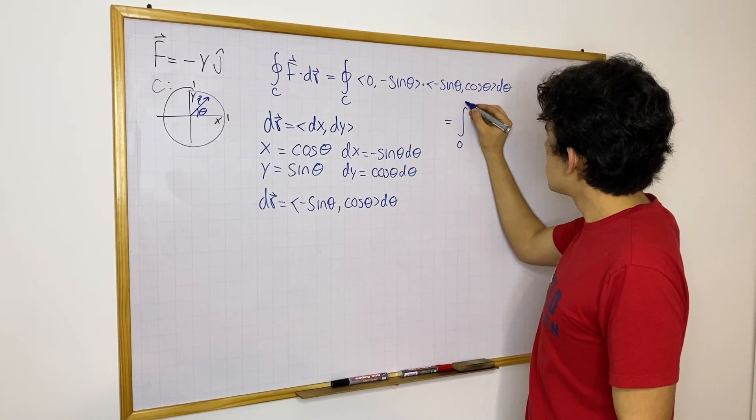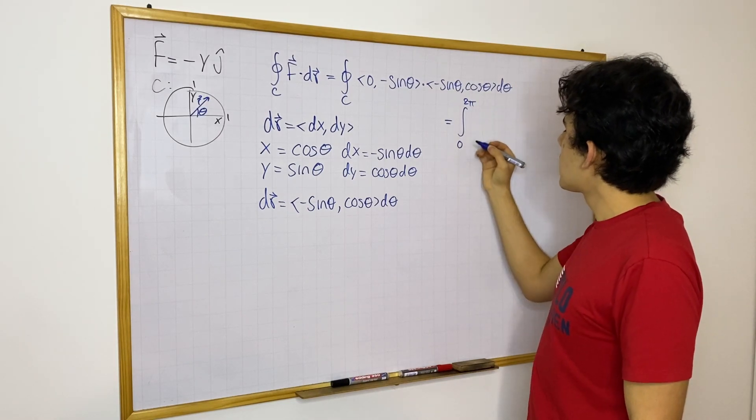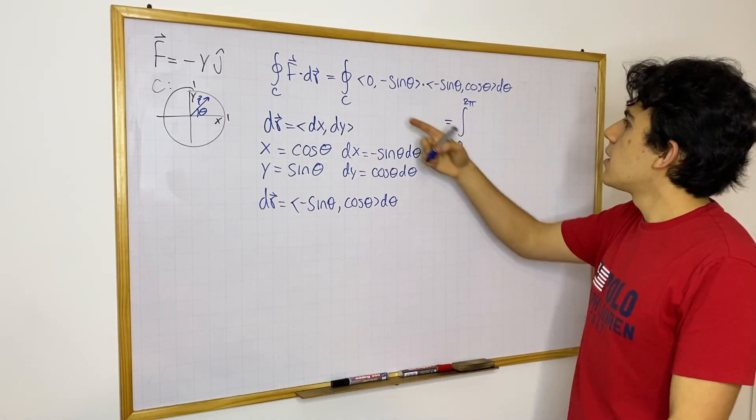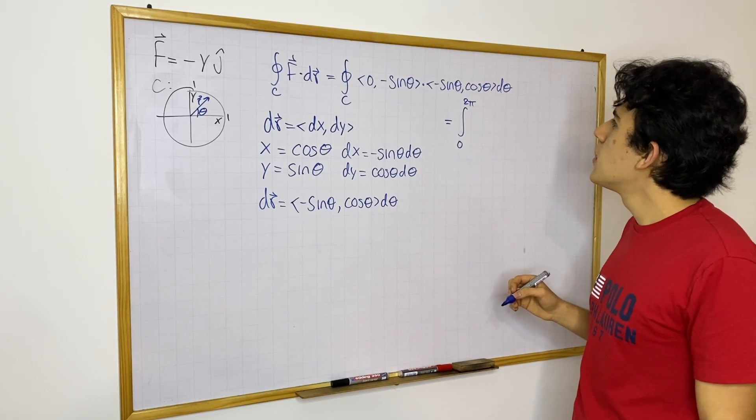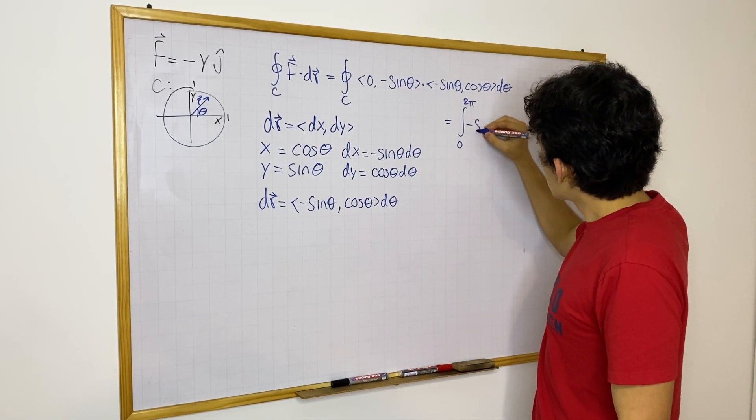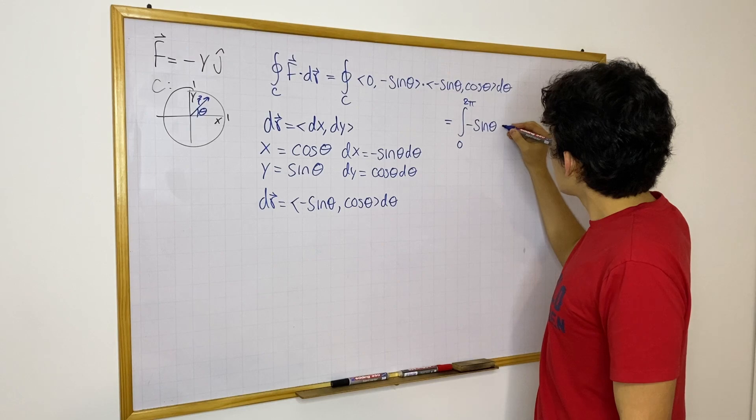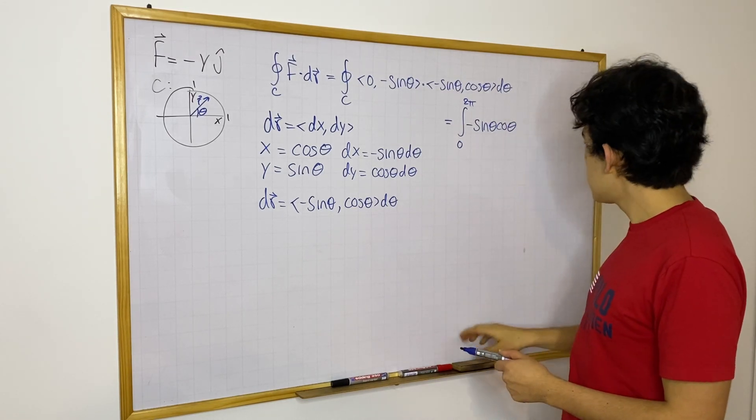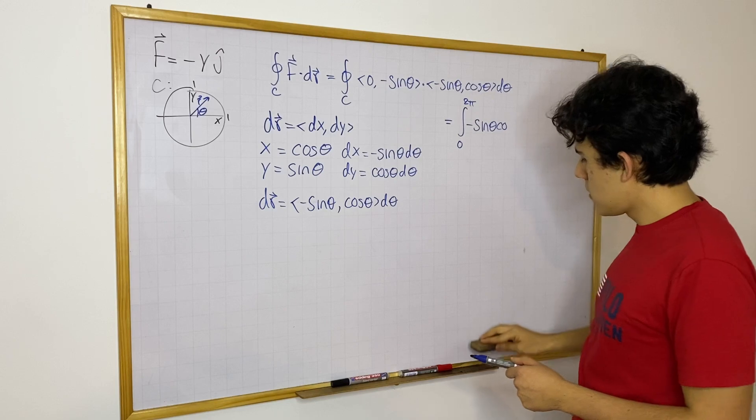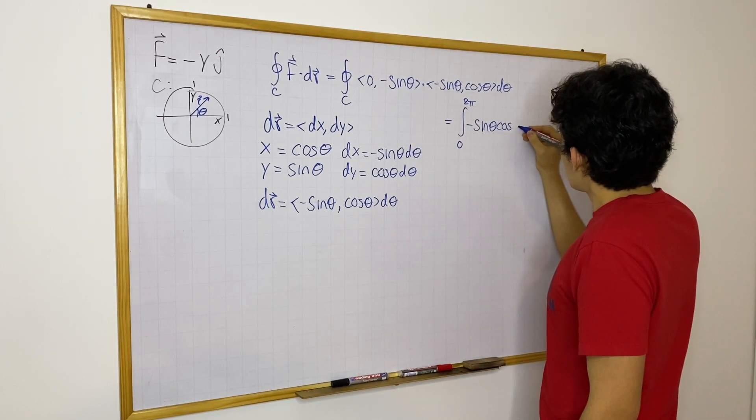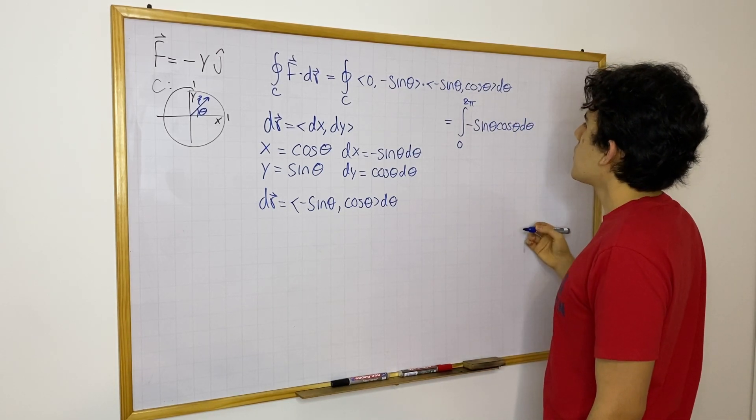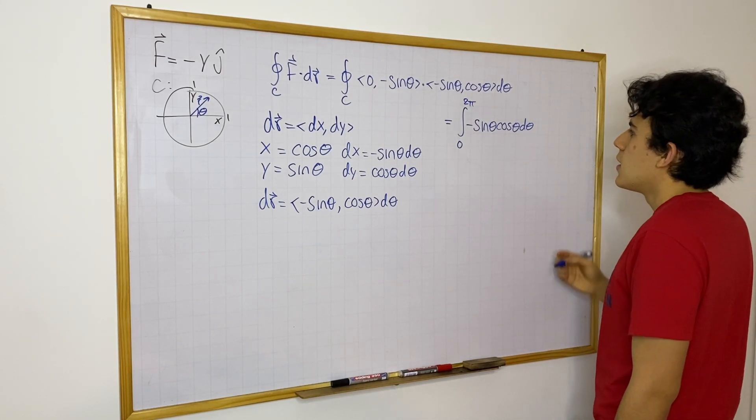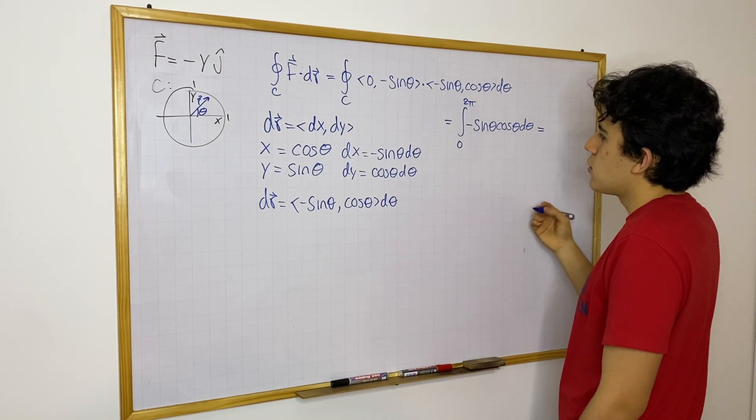So this is equal to a normal definite integral of zero from zero to two pi of this and this equals zero. And then we have minus sine theta cosine theta. Great. So this is what we have. And then we need to integrate. This is very easy to integrate using u substitution.